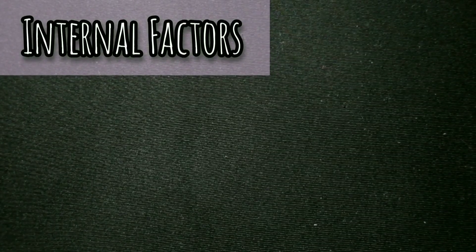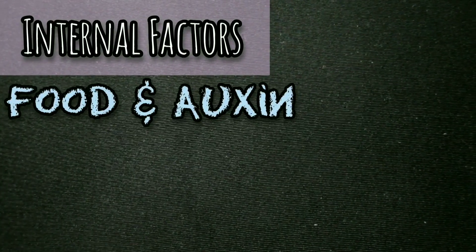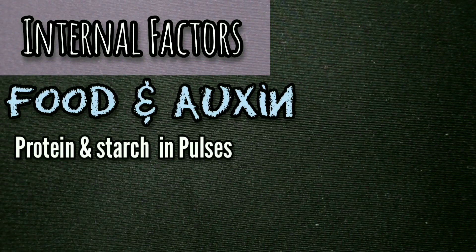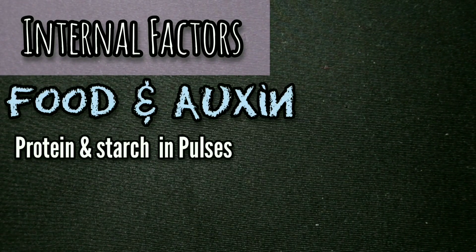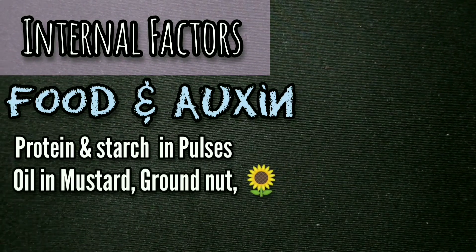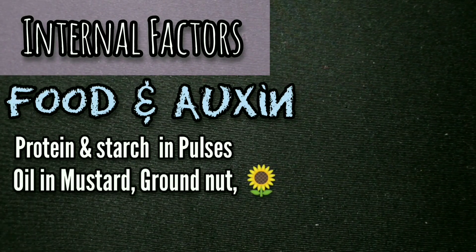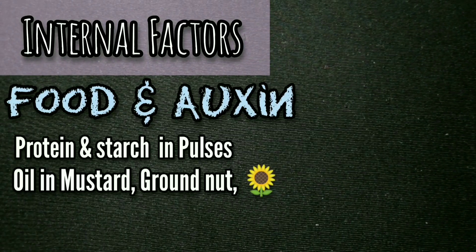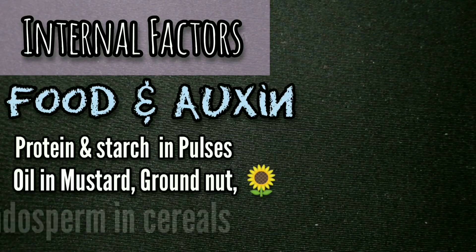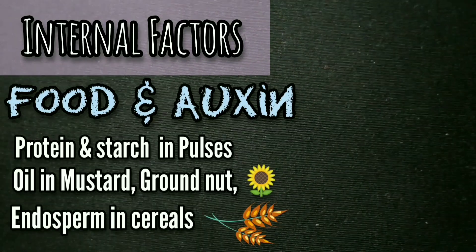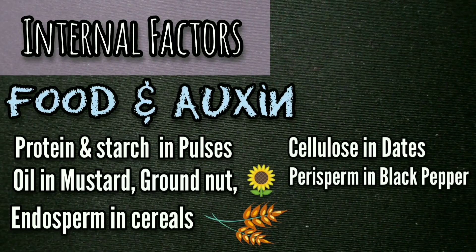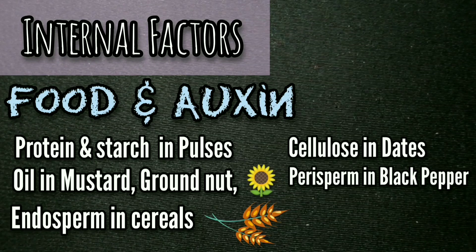Food is essential as an internal factor in germination. This food may be contained in the cotyledons — as protein and starch in pulses, oil in mustard, groundnut, and sunflower — or in the form of endosperm, like starch and a little protein in cereals, oil in castor and coconut, cellulose in date, perisperm in black pepper, and testa in pomegranate.